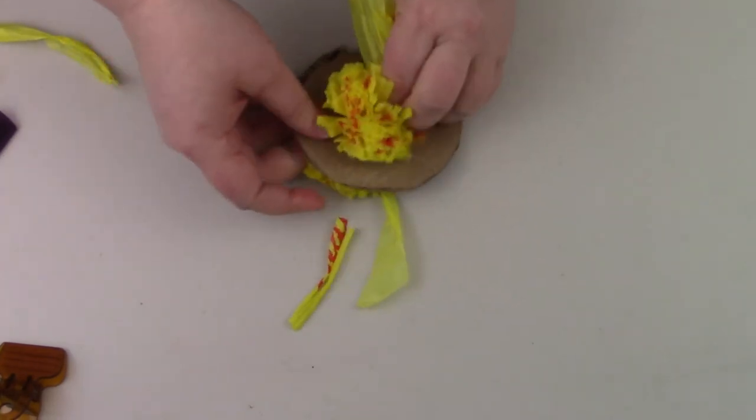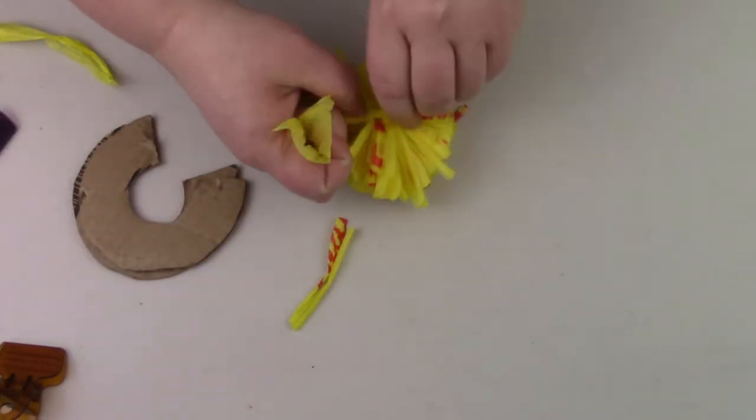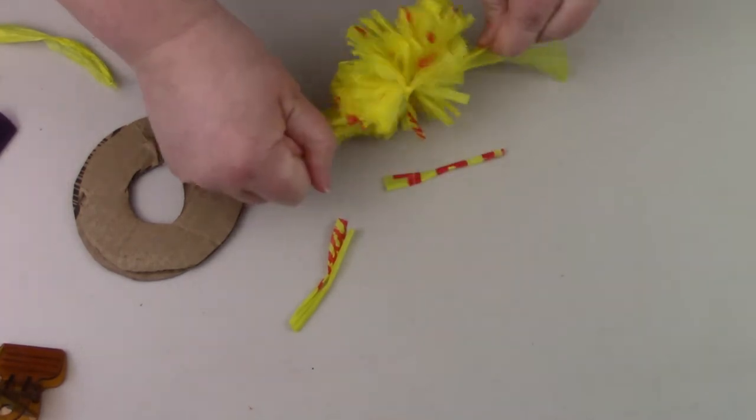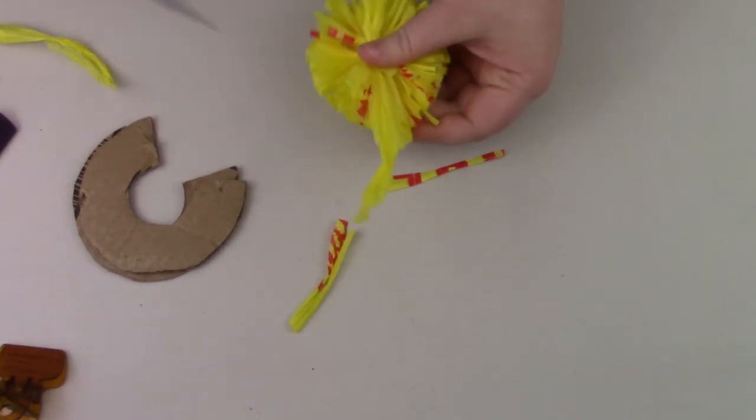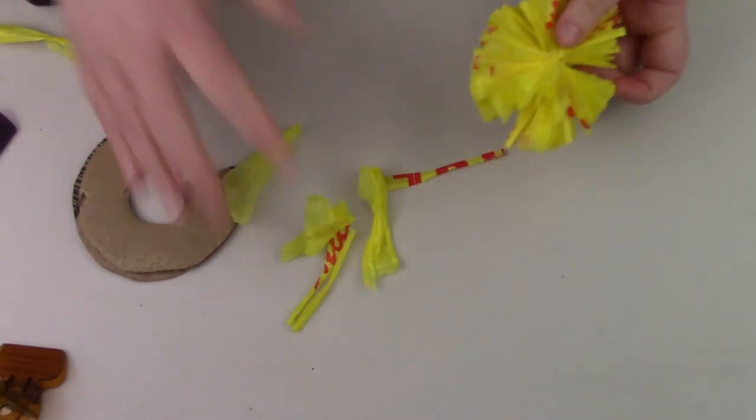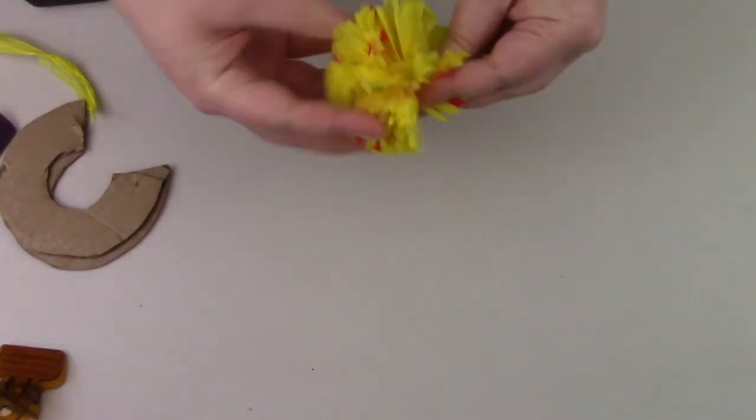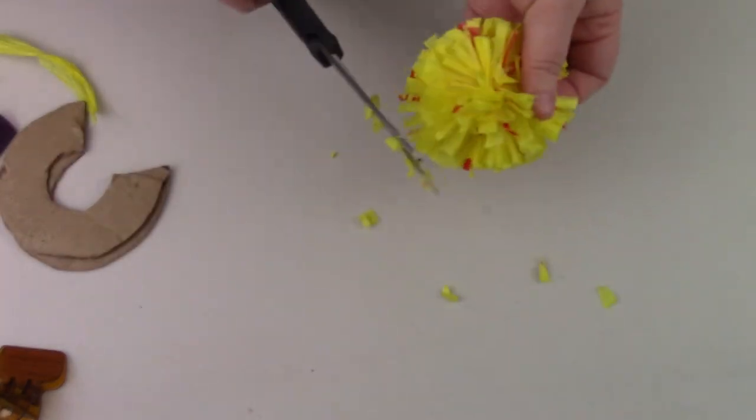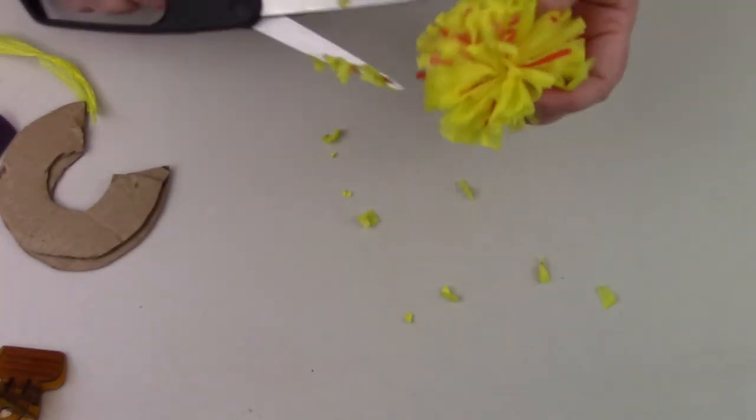After removing it from the form, make sure it's really really tight and do a second knot. Use scissors to make sure it's all even and fluff it out. This is definitely not my best looking pom-pom but you get the idea from it.